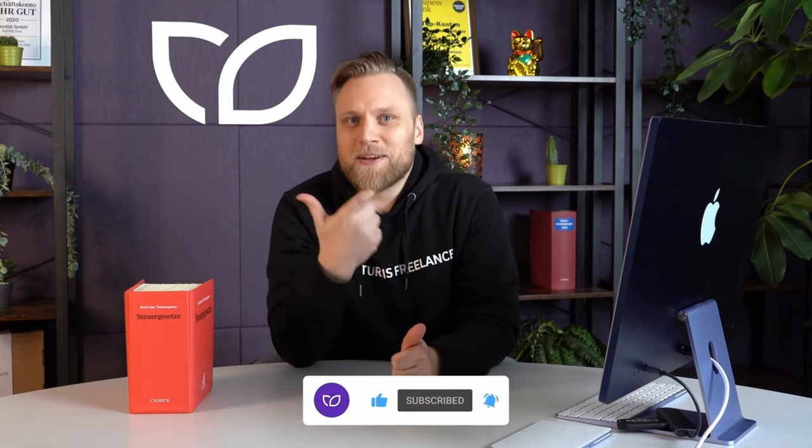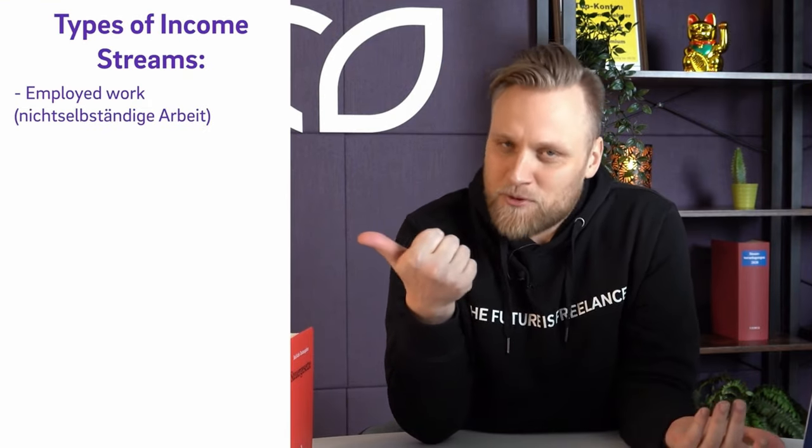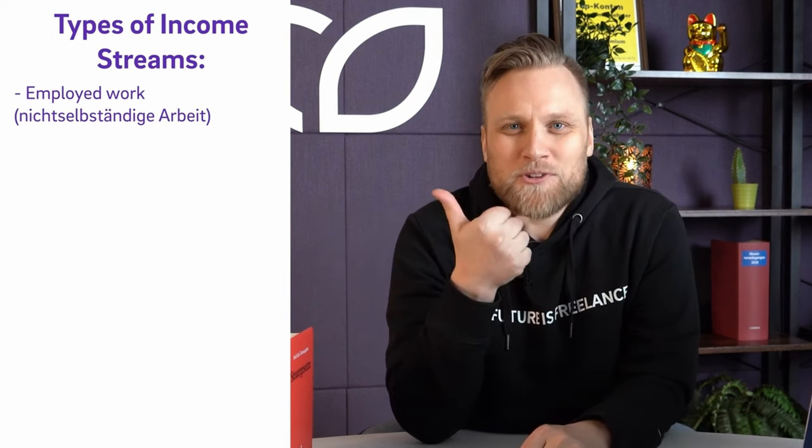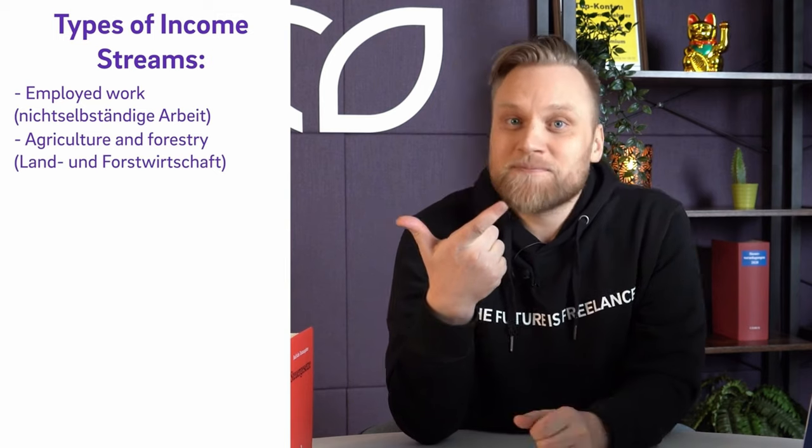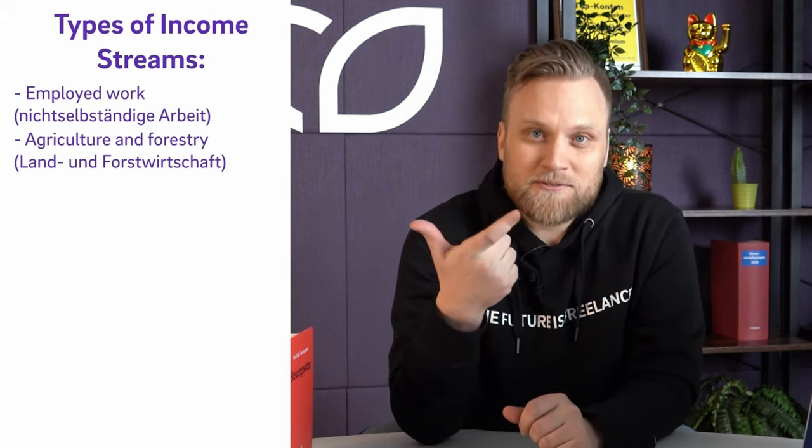German tax law distinguishes two self-employment types: income from freelance work, meaning income from self-employment, and income from business operations. If you're not a freelancer, then you're a business owner. In Germany, the income tax law recognizes a total of seven different income categories. In your tax return, for example, you must declare non-self-employed work income — meaning if you're employed somewhere, you declare employee income. There's also income from agriculture and forestry: if you have a farm, you must report your profit or loss in your tax return.